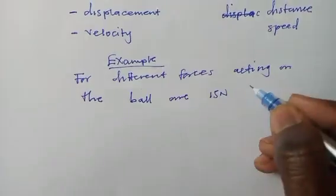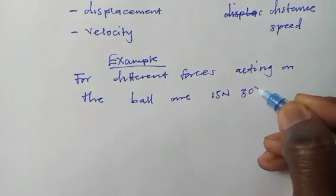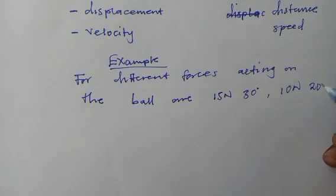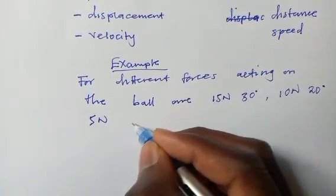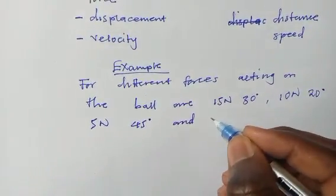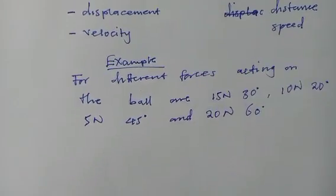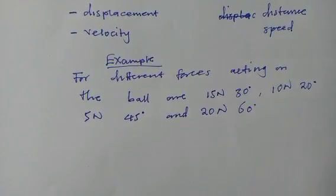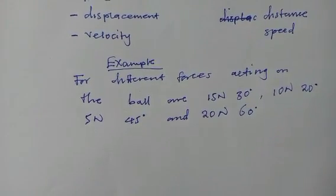The four different forces acting are: 15 newtons at 30 degrees, 10 newtons at 20 degrees, 5 newtons at 45 degrees, and 20 newtons at 60 degrees. The rule of vectors — the best rule that applies — is that all angles must be read from the positive x-axis.